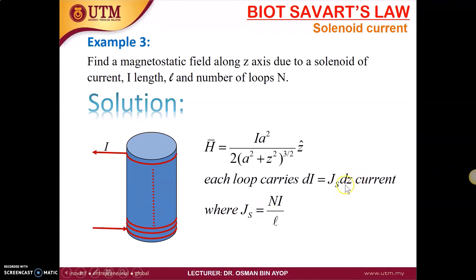The surface current density js is basically the number of turns N multiplied by the magnitude of current i divided by the length l. This is the surface current density.